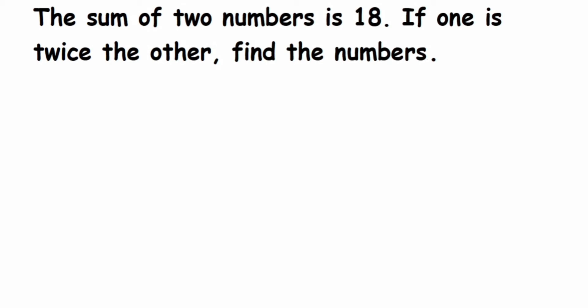So let's find the solution. Let the first number be equal to a, and the second number equal to b. Now according to the question, we have given that sum of these two numbers is 18, means if I add a and b I should get 18. So a plus b is equal to 18.